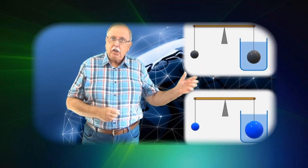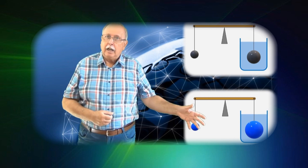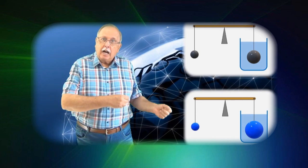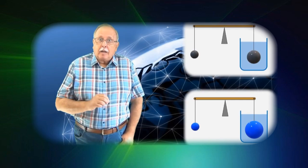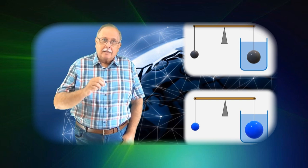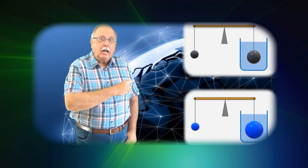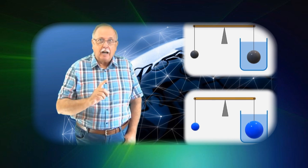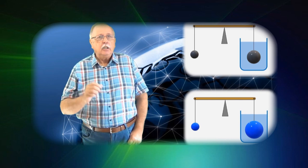Sferele din primul montaj sunt confecționate din alt material decât sferele din al doilea. Sferele din apă au raze diferite. Așa cum am spus, în ambele cazuri balanța este în echilibru, iar sferele din stânga au aceeași rază.